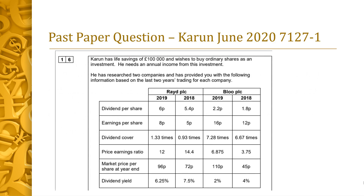So onto this past paper question — this is Karun from June 2020, a question on investor ratios, quite a classic question. Karun has life savings of £100,000 and wishes to buy ordinary shares as an investment, needing annual income. He's researched two companies: RAID PLC and Blue PLC, and you're given figures for five ratios plus the market price per share at the end of the year for comparatives across 2019.